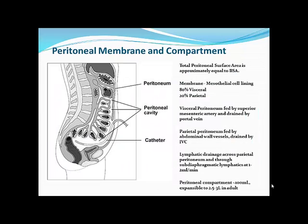In peritoneal dialysis, the semipermeable selective membrane is the peritoneal lining of the abdominal cavity. Its surface area approximates body surface area. About 20% is the parietal peritoneal membrane lining the abdominal wall, and the remaining 80% is the visceral peritoneal membrane covering the viscera. The visceral peritoneum likely contributes most to clearance and fluid exchange due to its greater surface area. It's fed by the superior mesenteric artery and drained by the portal vein, while the parietal peritoneum is fed by abdominal wall vessels and drained by the IVC.